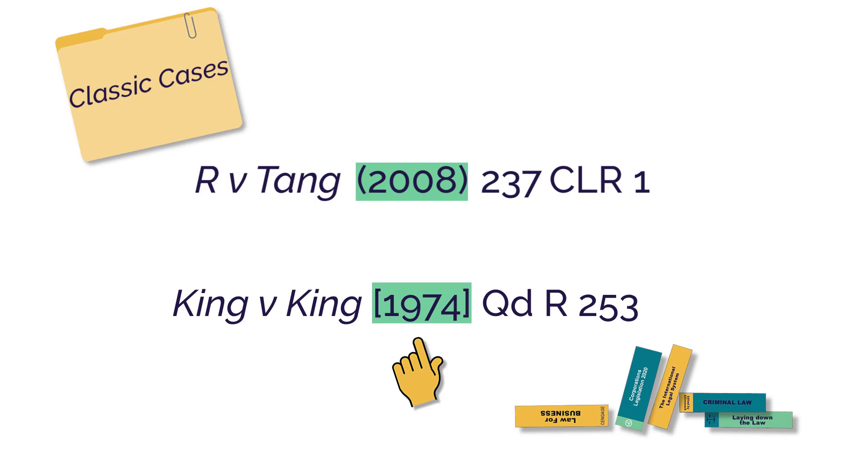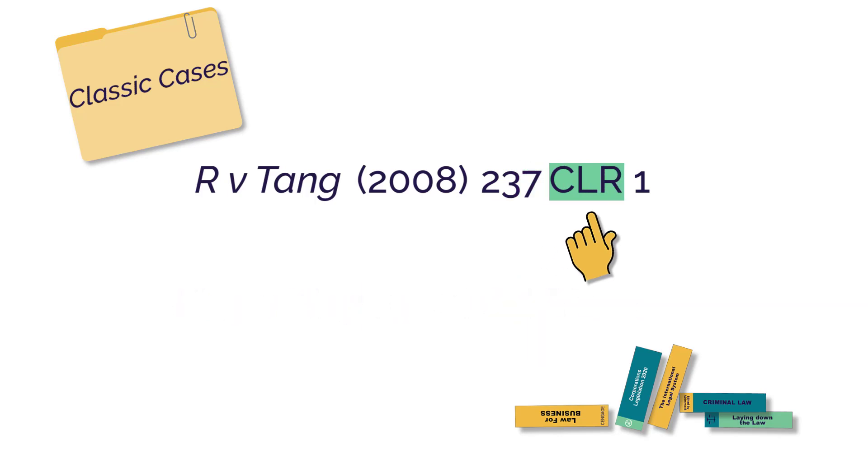You can check to see what brackets you need to use by looking at the case. Next comes the volume number. But some cases won't have a volume number. Always use the authorised report where available and abbreviate the name of the report series.